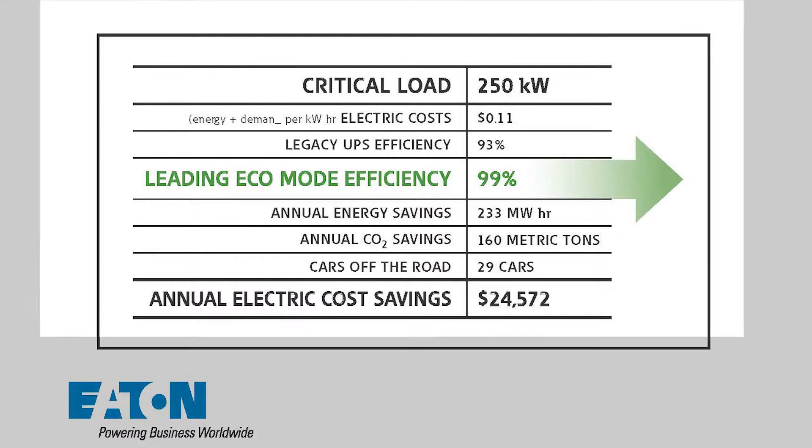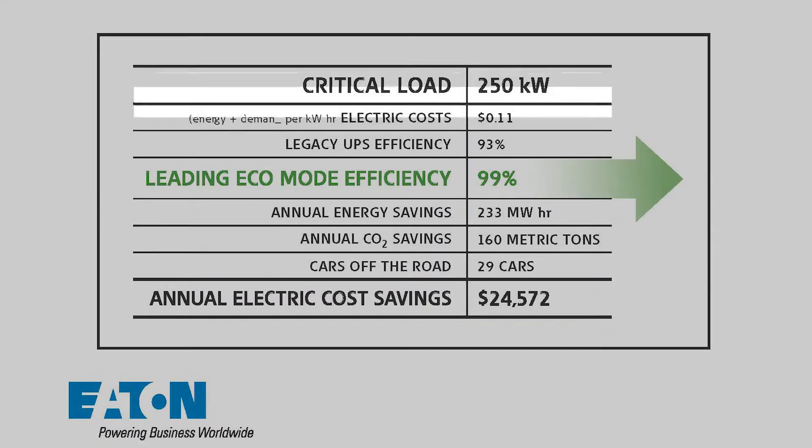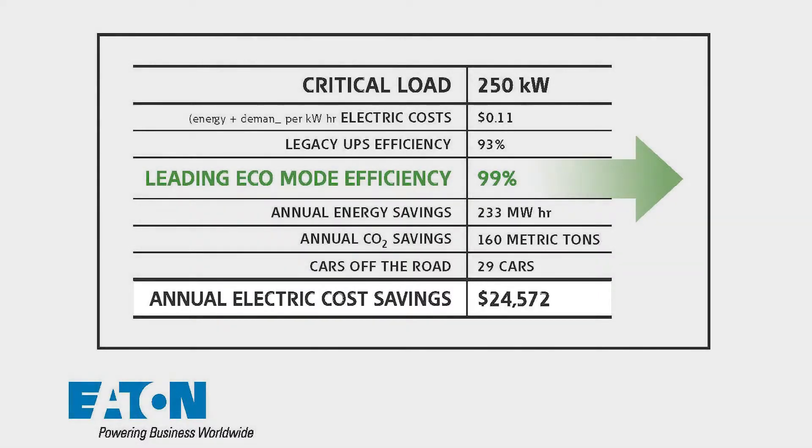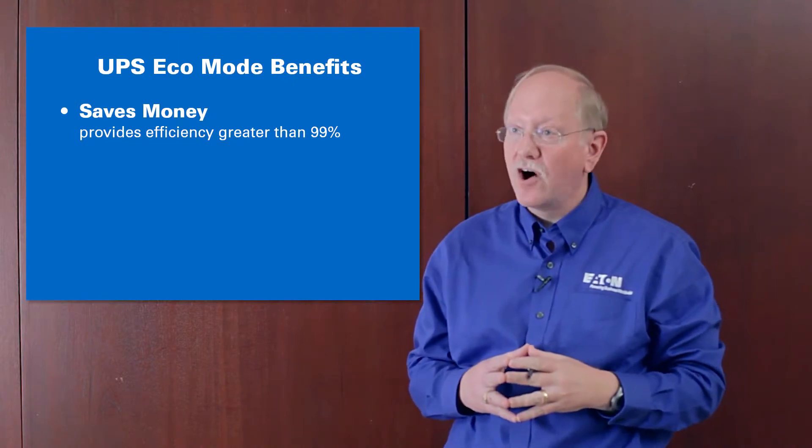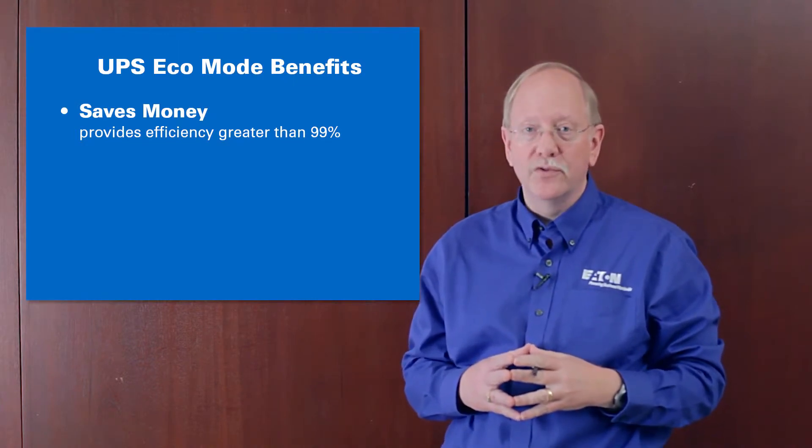Here we have a 250 kilowatt UPS compared against a legacy UPS that's 93% efficient using an eco mode UPS at 99% and the savings at 11 cents a kilowatt hour are $24,500 per year of operation. Significant savings and will actually repay the cost of the UPS within two to three years.